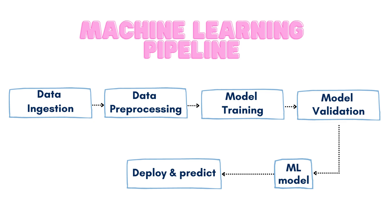Once our data is clean and pre-processed, we can now train our model on a part of this data that we call the train set. Then, in order to validate the performance of our model, we need to check if it returns a good prediction based on the remaining part of the data, which we call the test set. Finally, if everything works fine, we can deploy our model and serve it as an API, so it can be used by public users.